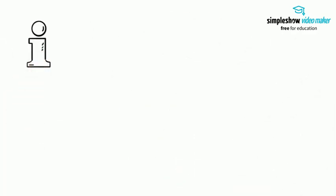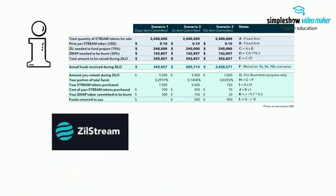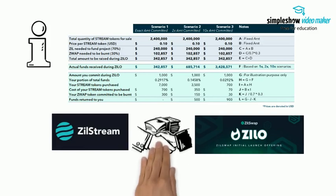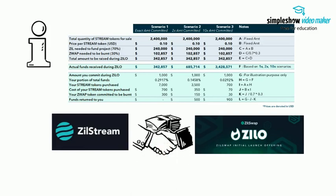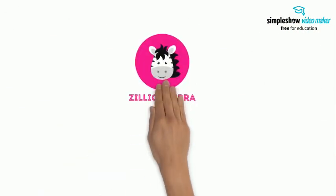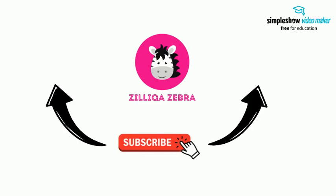This is the current level of details made available so far. This seems to be an exciting offering for Stream, as well as for using ZillSwap for token launches, which will without a doubt create more real use cases and utility for the Zilliqa ecosystem. Don't forget to subscribe to my channel for more educational updates, and check out my other videos which might be of interest to you.